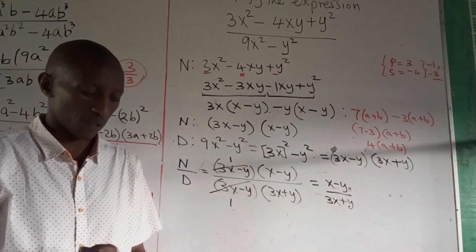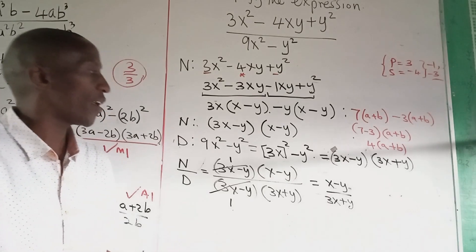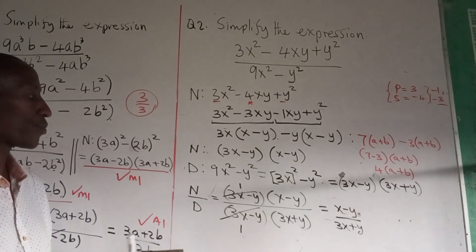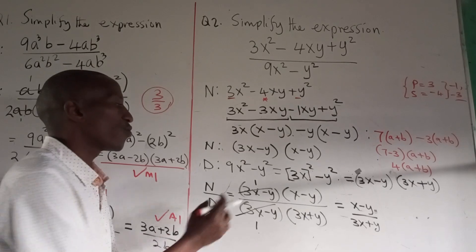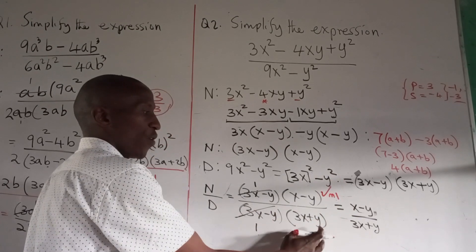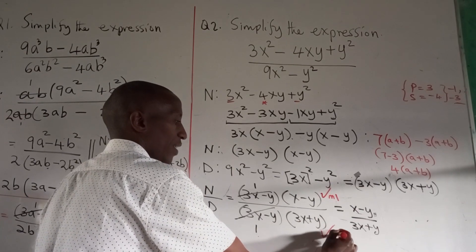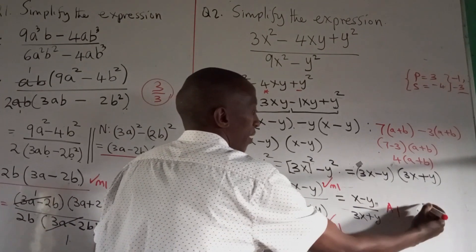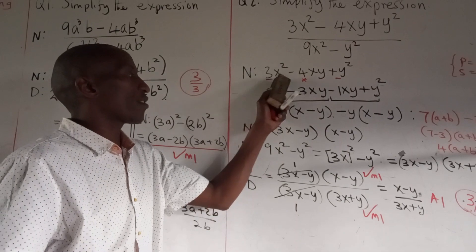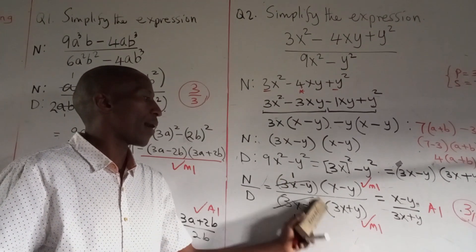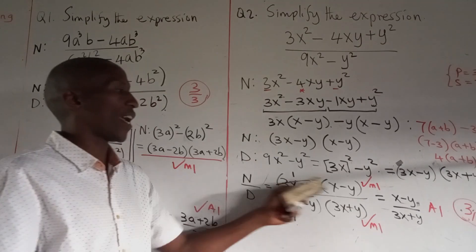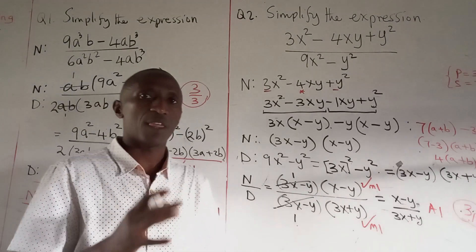For marking: correctly factoring the numerator earns M1, correctly factoring the denominator earns M1, and the final simplified answer earns A1. With all factors well placed, the student scores 3 out of 3.